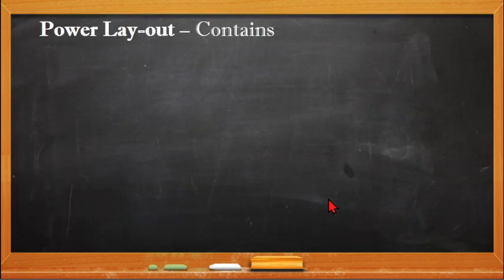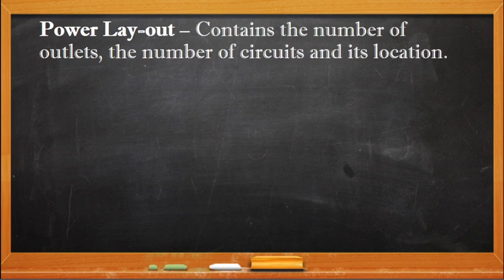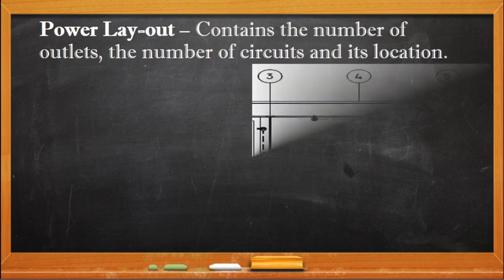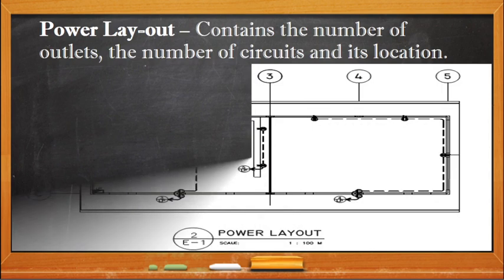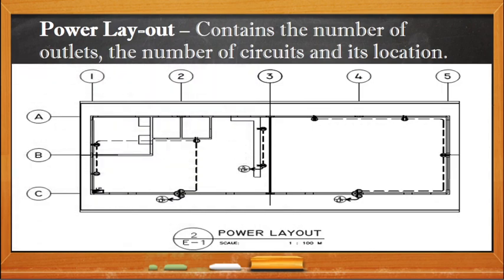We now go to the power layout. The power layout contains the number of outlets, the number of circuits, and their location. This is an example of a power layout. These are the symbols for an outlet.